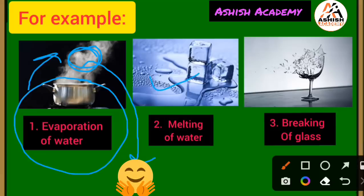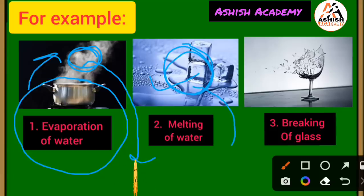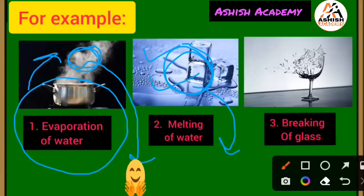Melting of water — aice ka pighalna (melting of ice). Ice melts, and after melting it comes into a water state. When we place it back at freezing point, it goes back to solid state. So no new substance is formed, therefore this is a physical change.